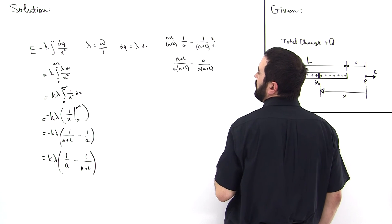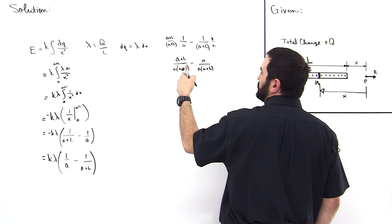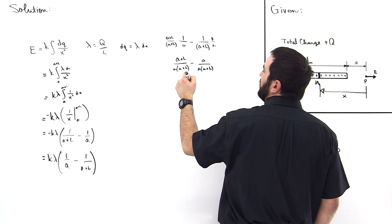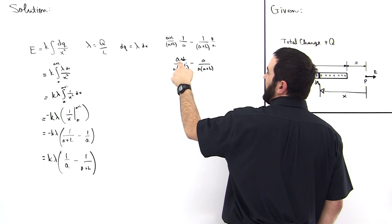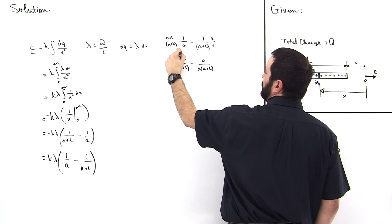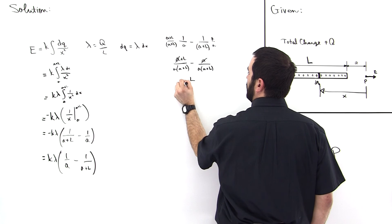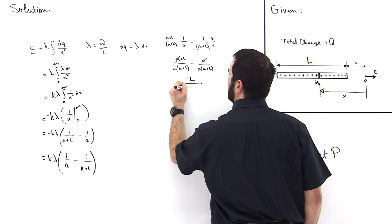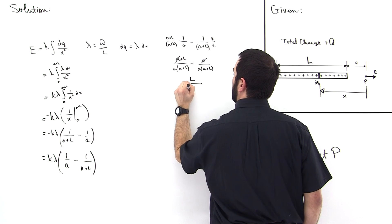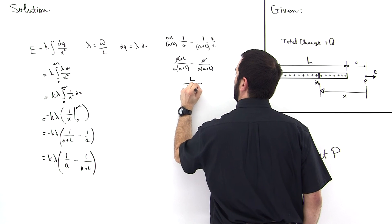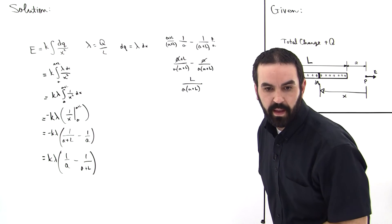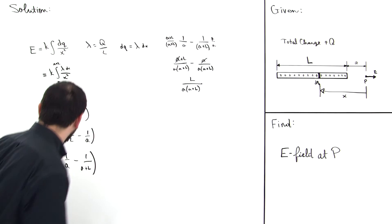We have common denominator, so we can just perform the operation above. Notice the A's - it's A plus L minus A. So this guy is going to cancel with this guy. And you're just left with L over A times A plus L.